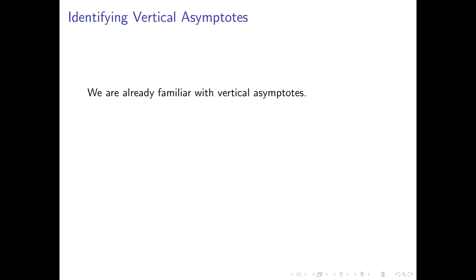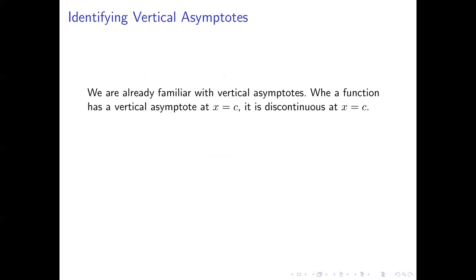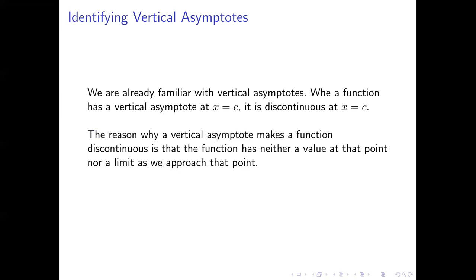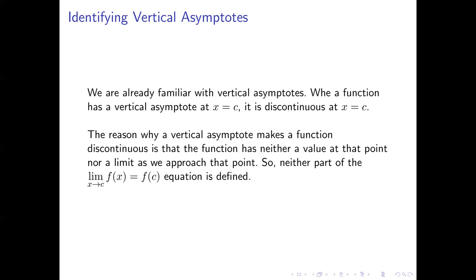We already know something about vertical asymptotes from an earlier lesson. The key thing to add here is that when a function has a vertical asymptote at x equals c, the function is discontinuous there. The reason is that when you have a vertical asymptote at x equals c, the limit as x approaches c doesn't exist — it's either positive or negative infinity. It's also the case that f of c is undefined, so the equation that defines continuity can't be true, and our function is discontinuous where x equals c.